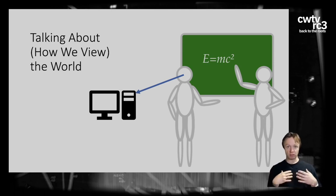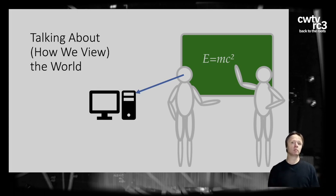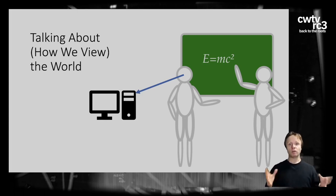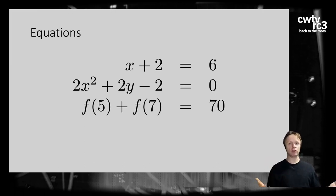The value of mathematics for software comes in because software is also an image of our perceptions of the world around us, at least useful software is. One particularly useful part of mathematics for software construction is the language of equations. For example, X plus 2 equals 6 specifies a value for X. The next equation has two variables: 2X squared plus 2Y minus 2 equals 0 — a quadratic equation that might have several solutions.